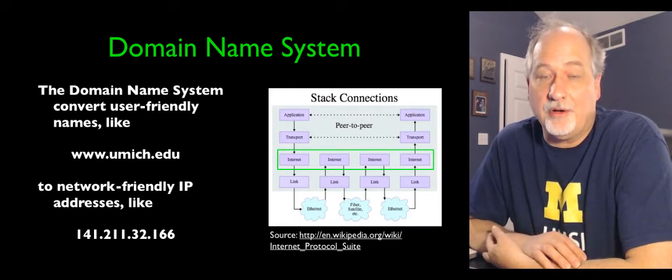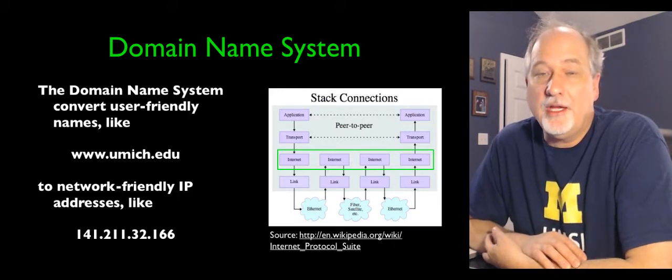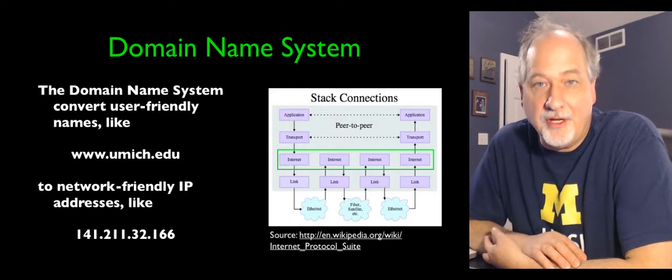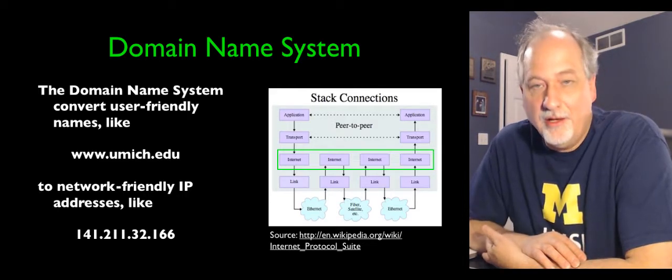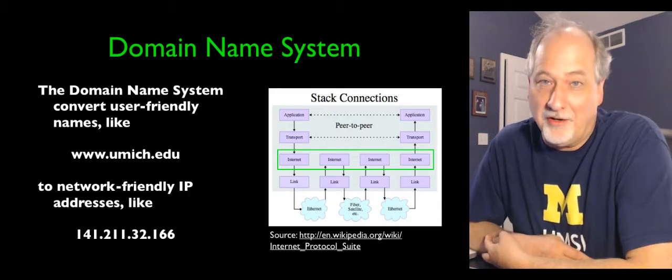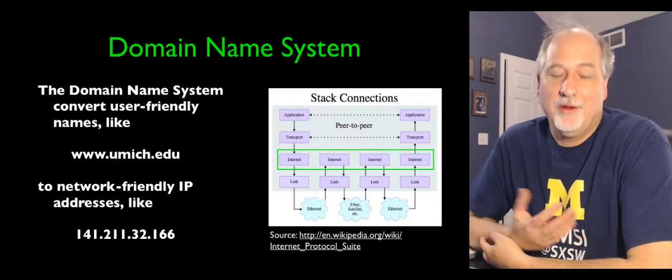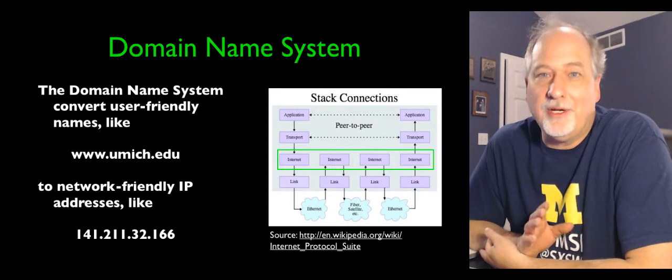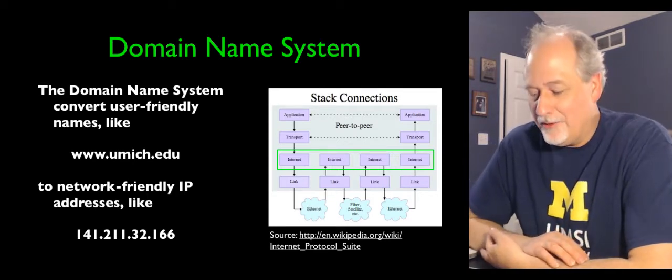These network numbers and IP addresses are important because they encode the geography of the connections of the internet. But we humans don't care about the geography. We want to remember www.umich.edu or www.facebook.com.